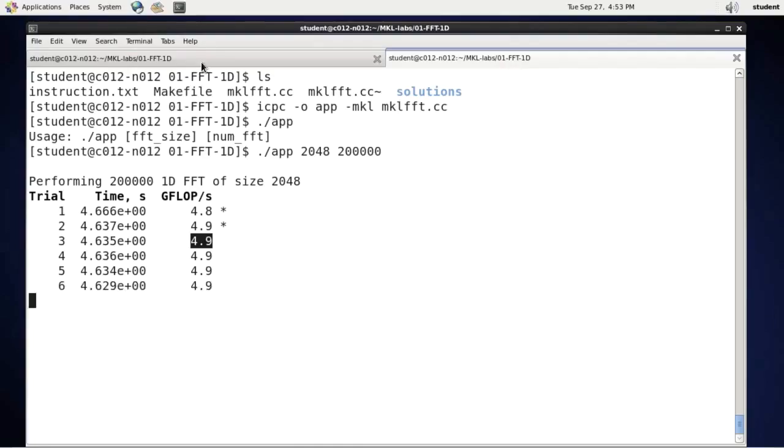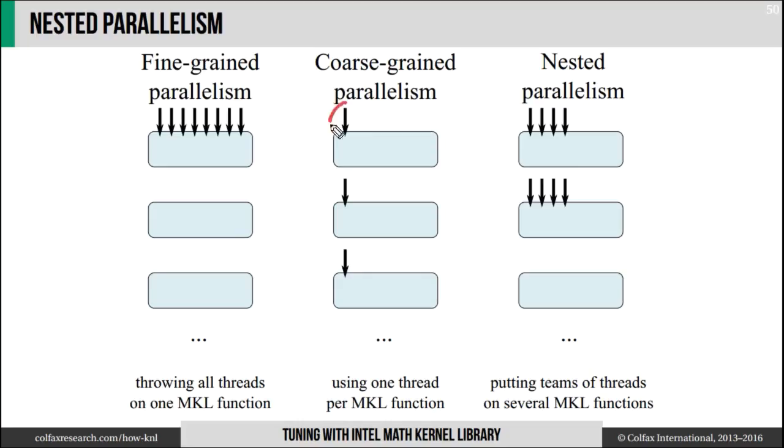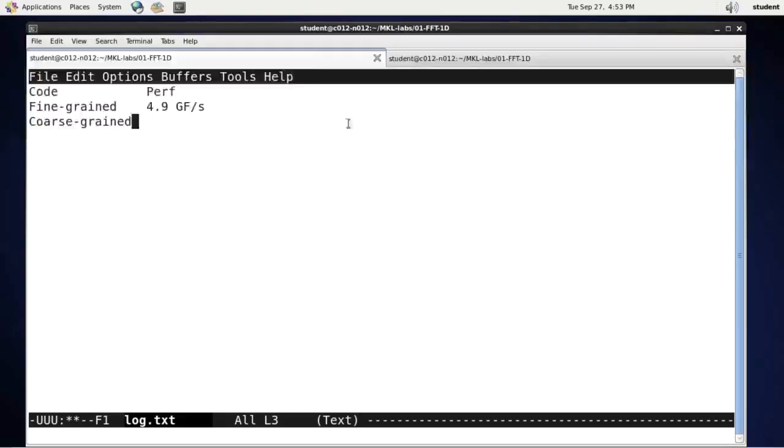So let's try another approach. Let's try the coarse-grained approach. This is where we are going to put one thread on each dataset but process multiple of them at once, many of them at once. This is how I'm going to do this.